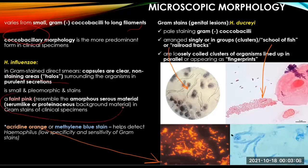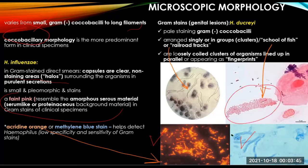Because of the low specificity and sensitivity of gram stains, an acridine orange or methylene blue stain of the specimen may help detect Haemophilus. Gram stains from the genital lesions for H. ducreyi show pale-staining gram-negative coccobacilli, characteristically arranged singly or in groups — in clusters giving the 'school of fish,' 'railroad tracks,' or 'fingerprints' appearance — loosely coiled clusters of organisms lined up in parallel.